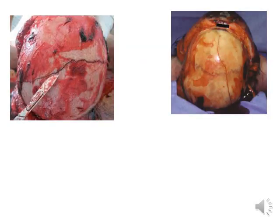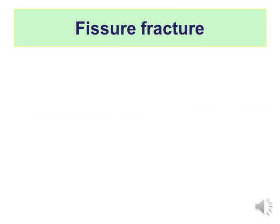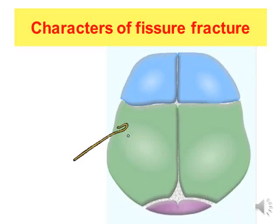The characters of fissure fracture: the instrument is a blunt object with wide striking surface area and low momentum. The fracture starts from the point of impact and spreads along the skull, choosing the weakest points. Fissure fracture may bifurcate and may occur on either side of the point of impact.